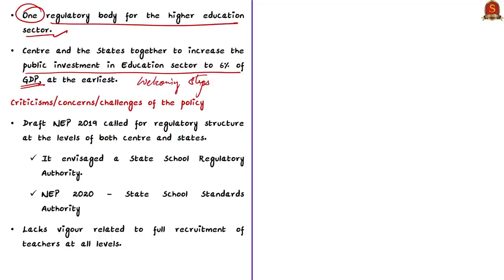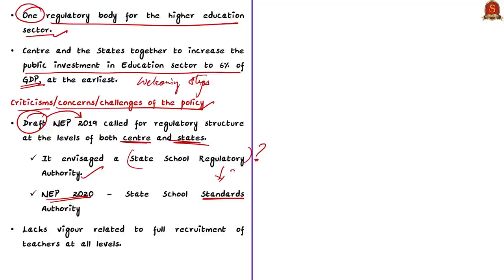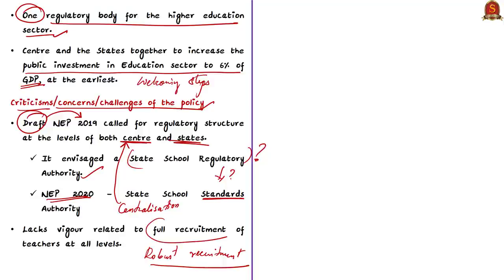Now let us see some criticisms or shortfalls of the new education policy. Firstly, the draft NEP called for a state school regulatory authority, but the NEP 2020 provides only for a state school standards authority, which is seen as centralization of regulatory powers. In a diverse country like India, decentralization is more appropriate. The policy calls for robust recruitment mechanisms but did not promise full recruitment of teachers at all levels — a notable shortcoming.